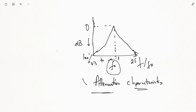At those points, 100 percent attenuation will be achieved. For our target frequency component, the power loss will be zero percent. The attenuator helps reduce the other frequency components, but they will not be completely removed.